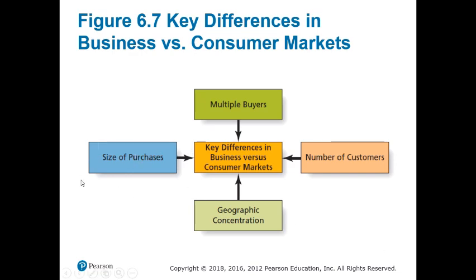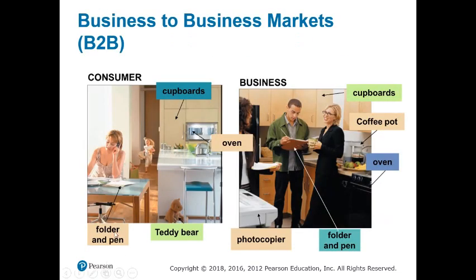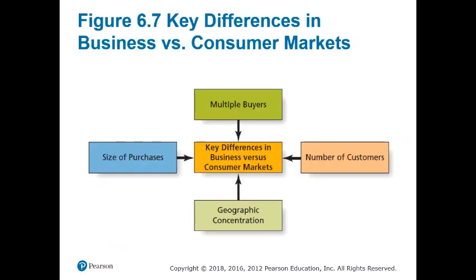The size of purchases is another major difference. Whereas you might sell one or two boxes or small quantities to individual consumers, to the business market you will sell boxes of cupboards, several ovens for an office, or cases of folders and pens. These volumes and sizes of purchases are much larger, which is why B2B market transactions account for most of the dollar sales compared to individual consumer transactions.